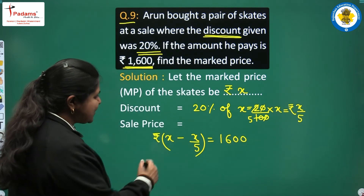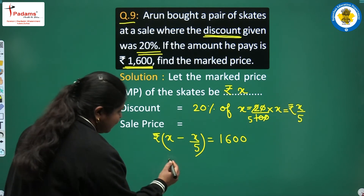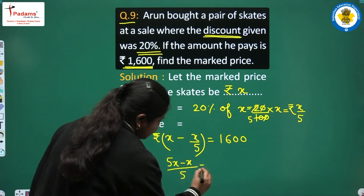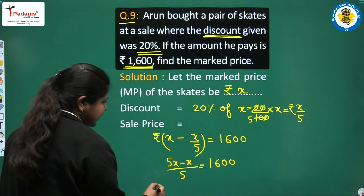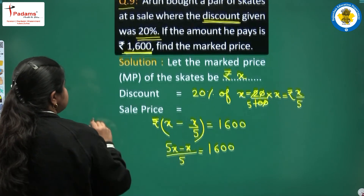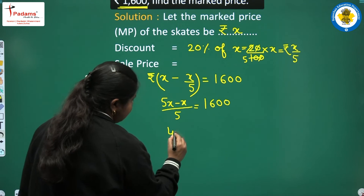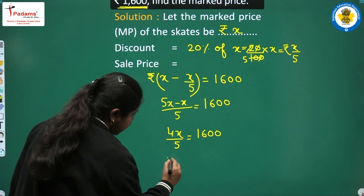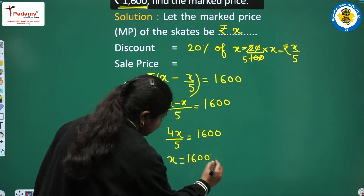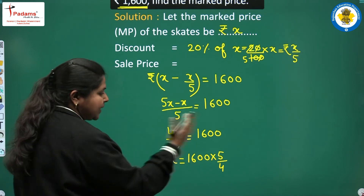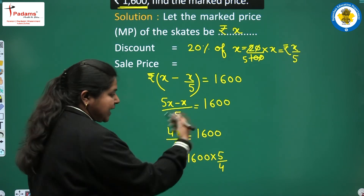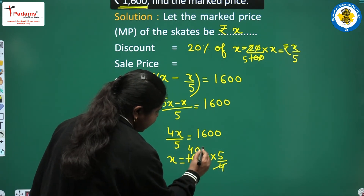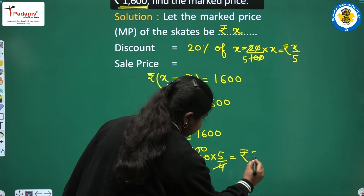We can easily solve this equation. 5x minus x upon 5 = 1,600, giving 4x/5 = 1,600. Transposing, x = 1,600 × 5/4. Cancelling 4 into 1,600 gives 400, so x = 400 × 5 = Rs. 2,000. So this is the marked price for the skates.